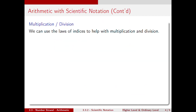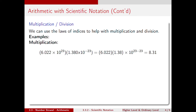The laws of indices will be very helpful in doing multiplication and division. To multiply two numbers together we simply multiply the two digits: 6.022 times 10 to the 23 multiplied by 1.380 times 10 to the minus 23 is equal to 6.022 times 1.38, multiplied by 10 to the 23 minus 23, using the laws of indices. This leaves us with 8.31.